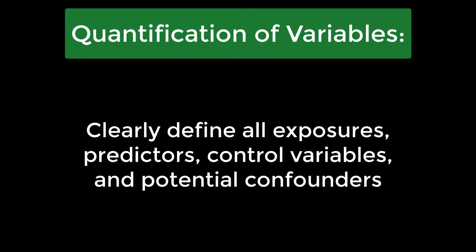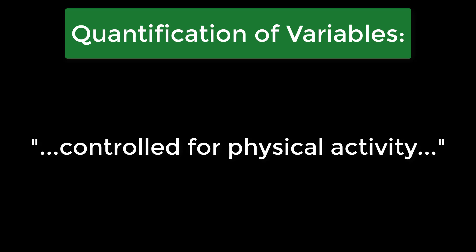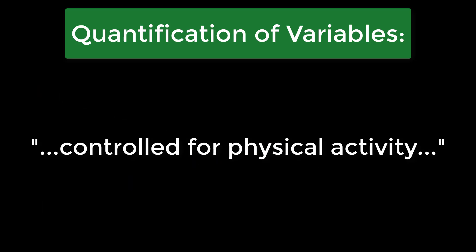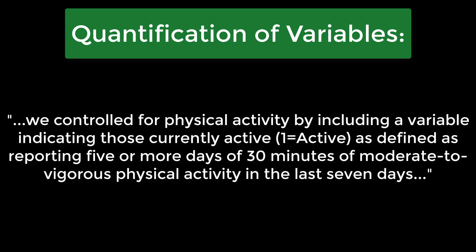It's important that you clearly define all exposures, predictors, control variables, and potential confounders. Ideally, you should operationalize your variables. For example, don't simply say that you controlled for physical activity when you report collecting data on numerous physical activity-related behaviors. It would be more helpful to explicitly state how you've operationalized the variable for the analysis — for instance: 'We controlled for physical activity by including a variable indicating those currently active, defined as reporting five or more days of 30 minutes of moderate to vigorous physical activity in the last seven days.'